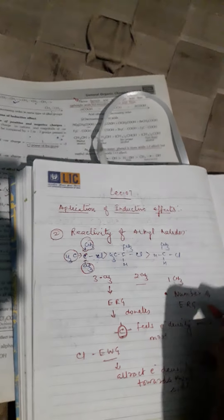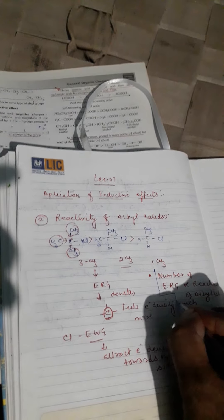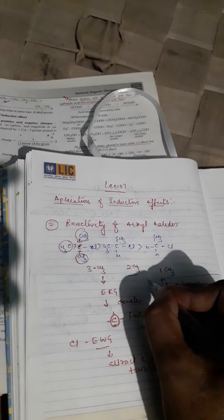So the reactivity order will be this one. Reactivity depends on the number of electron-releasing groups — the number of electron-releasing groups is directly proportional to the reactivity of alkyl halides. This is the formula, and you can apply this formula anywhere if an alkyl group is present. This is very important for you.